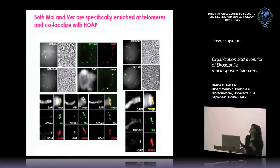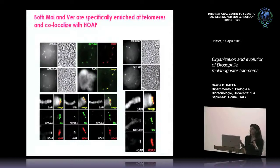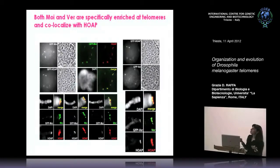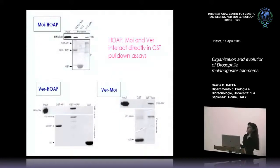We built flies carrying GFP-tagged versions of Modigliani, Verrocchio, and HipHop, and studied their distribution in vivo in nuclei from salivary glands. These three proteins form six bright fluorescent spots corresponding to the telomeres of polytene chromosomes. When we do immunofluorescence on fixed material, the signal of MOI and VER exactly co-localizes with HipHop. So these three proteins are all enriched at telomeres and only at telomeres. This complex can be immunoprecipitated from Drosophila cells from various tissues.